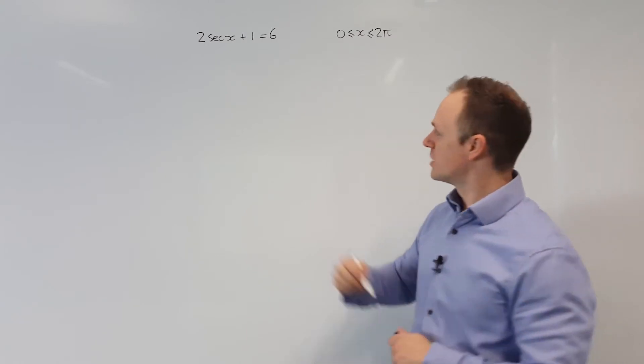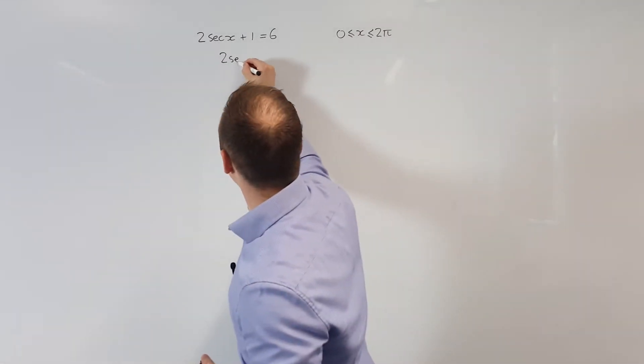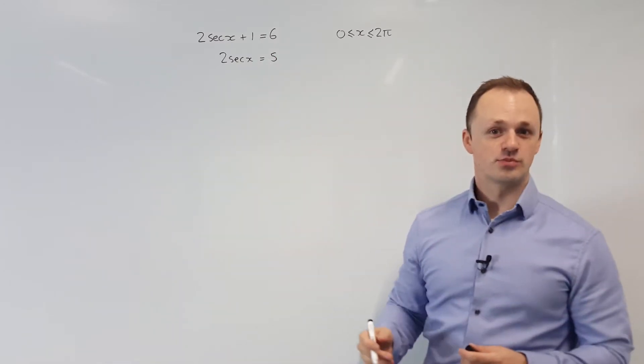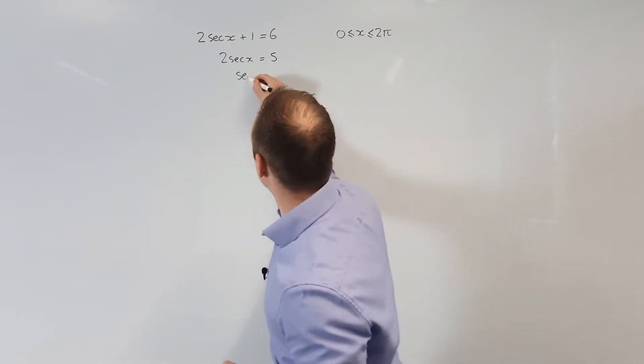First of all, we're going to take 1 from both sides. That will give us 2 sec x equals 5. Then we're going to divide both sides by 2. That gives us sec x is 5 over 2.